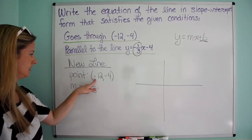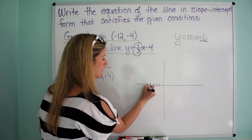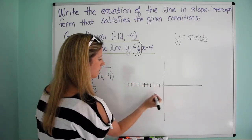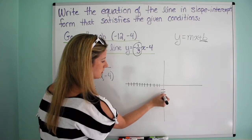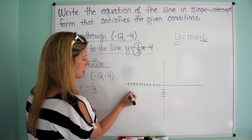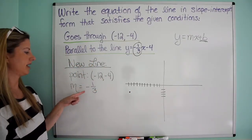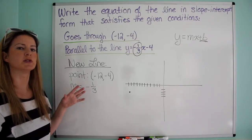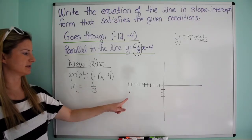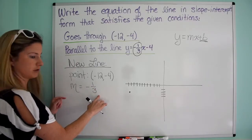So we're going to graph it. The line goes through point negative 12, negative 4. Counting: 12 left and 4 down — so we start right there at that point. Because we know the slope, we can plot other points on this line. The slope is negative one-third, which means we go down one and over three to the right — remember, rise over run.